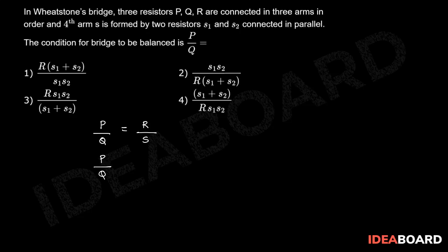Here P by Q equals R by... in the fourth arm S1 and S2 are connected in parallel combination. So it is S1 S2 by S1 plus S2.